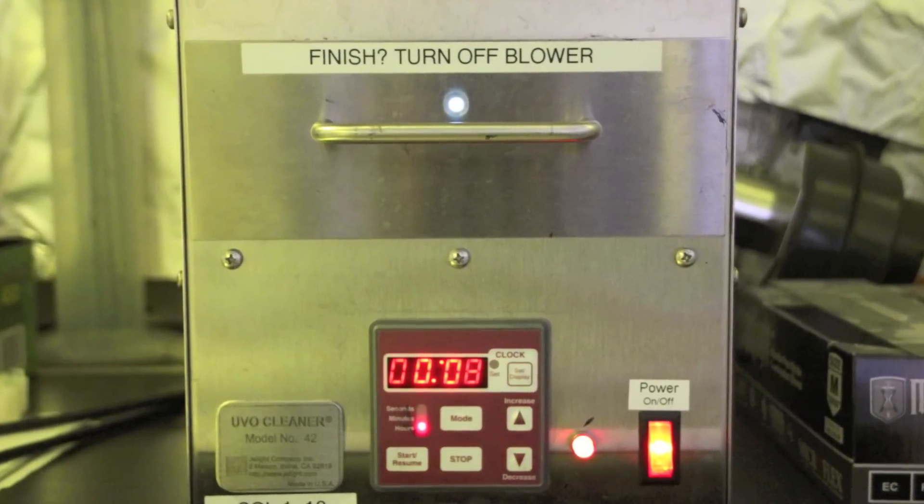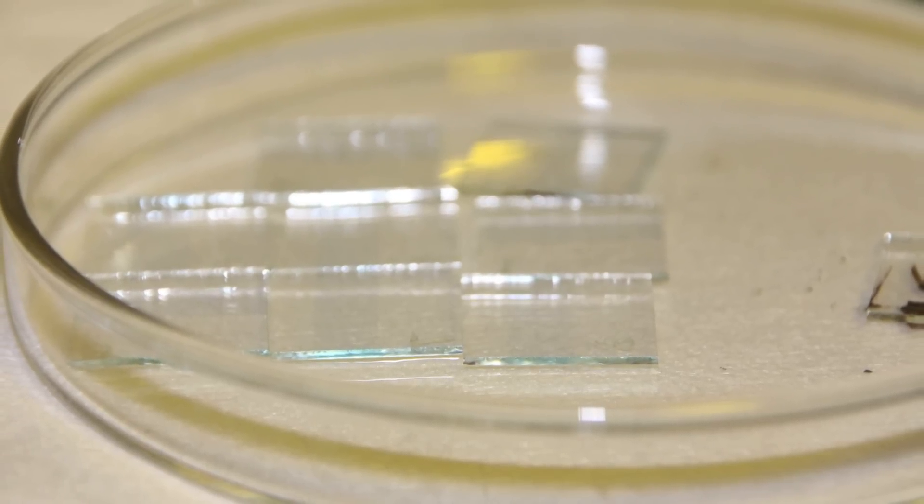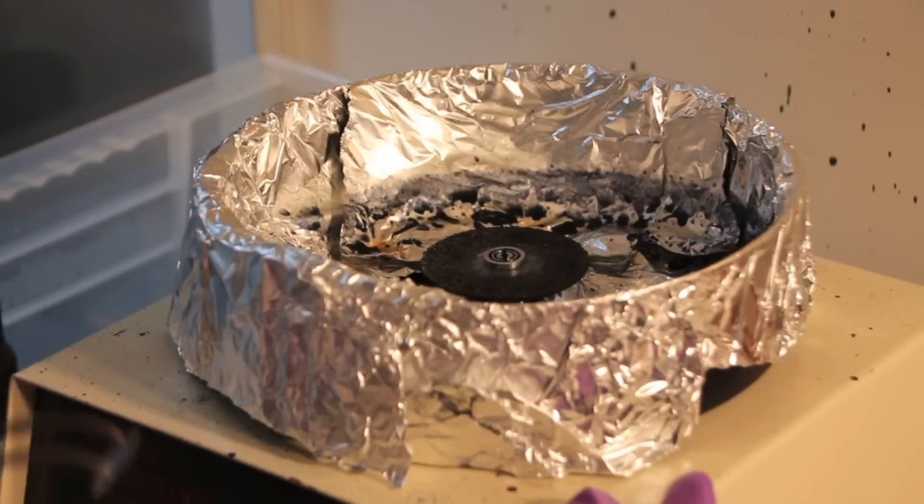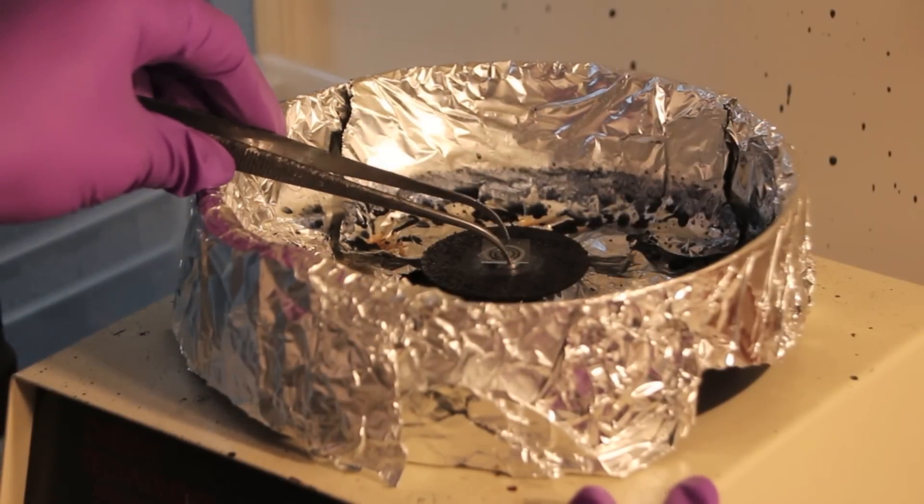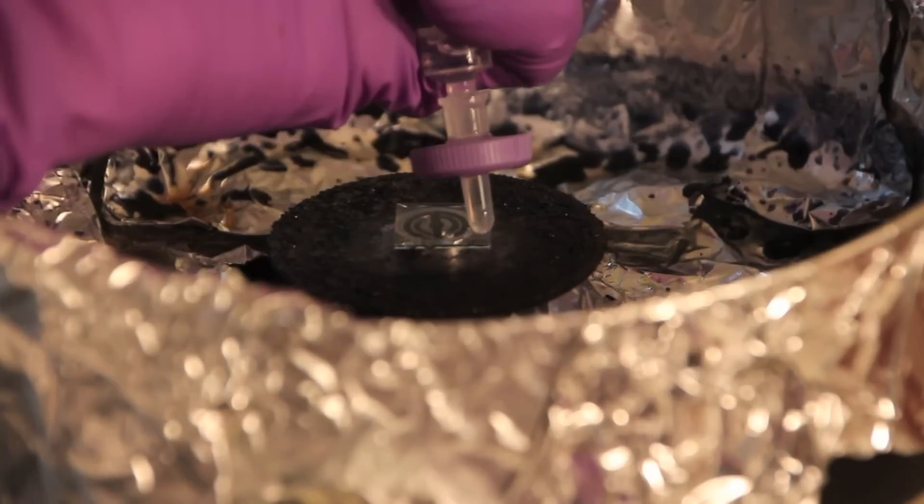Next, a UV-Ozone treatment is carried out on the patterned ITO substrates for about 10 minutes. After this, an electron transport layer is coated onto the substrates which are then thermally annealed on a hotplate.